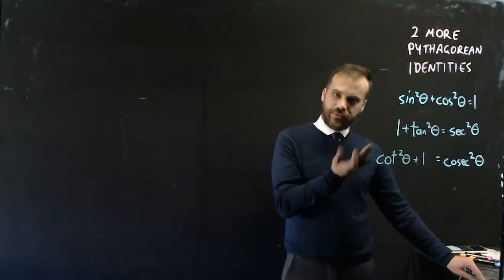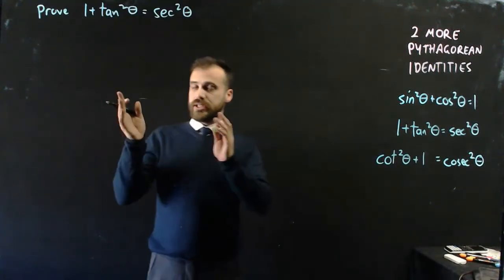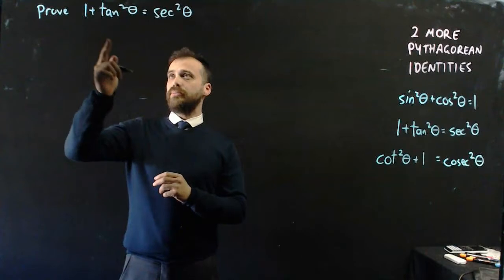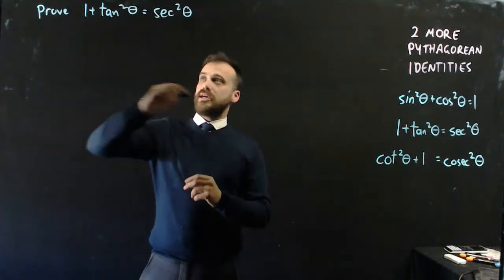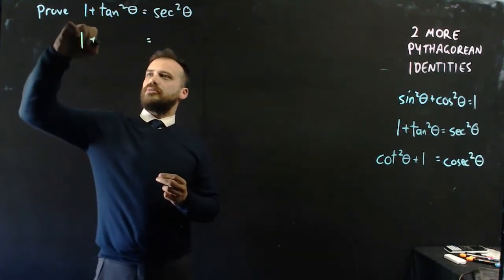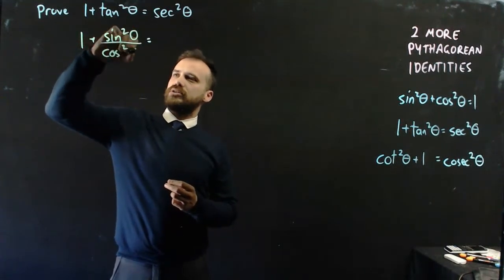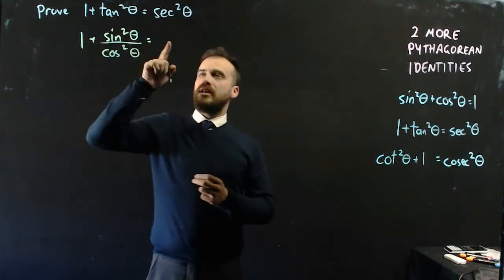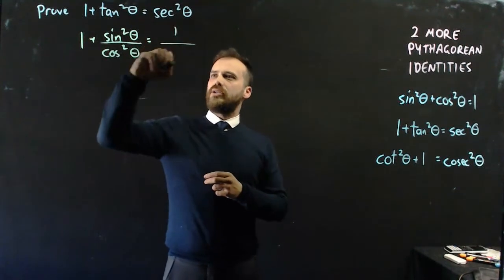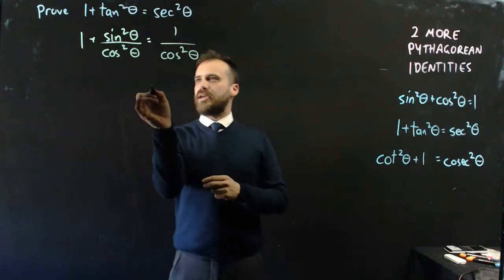We're just going to quickly prove that both of these are true. You might want to prove this yourself, so you might want to pause the video, but I'm going to prove this one. 1 plus tan squared theta equals sec squared theta. I can rewrite tan squared theta as 1 plus sine squared theta over cos squared theta, and I can rewrite sec squared theta as 1 over cos squared theta.